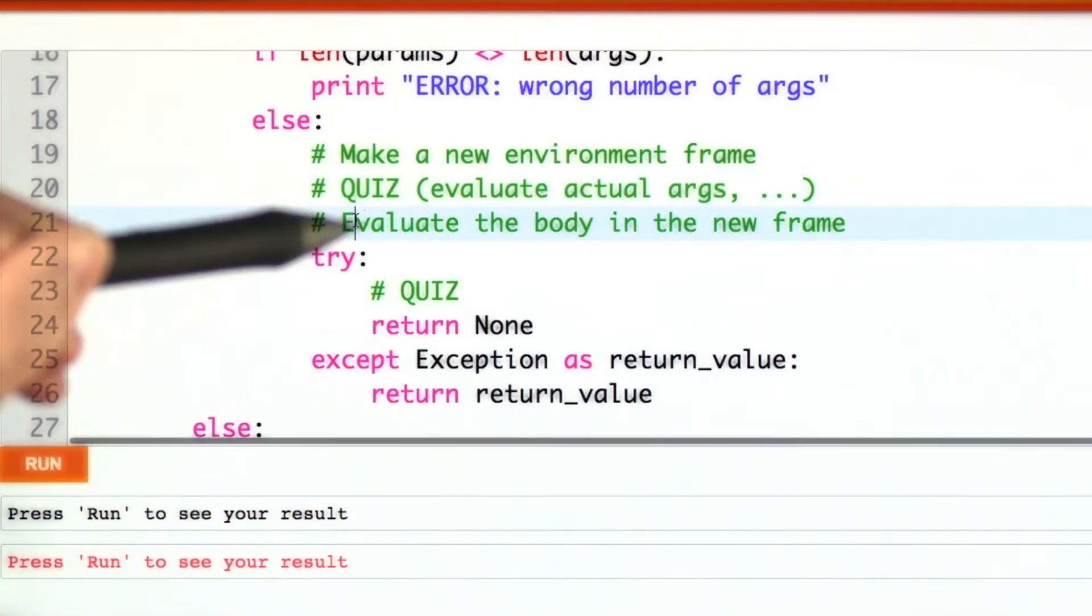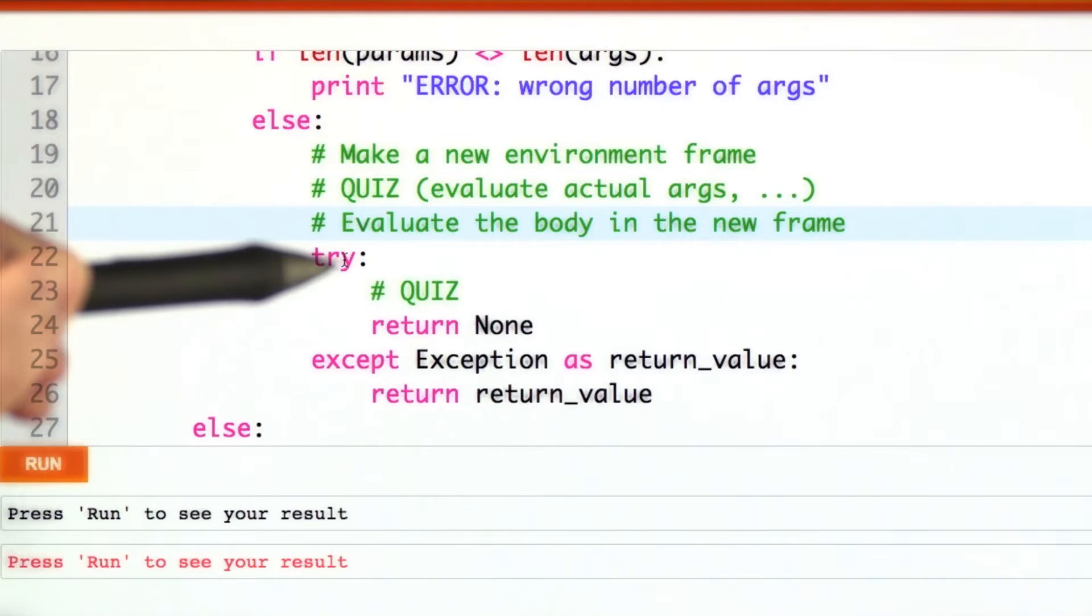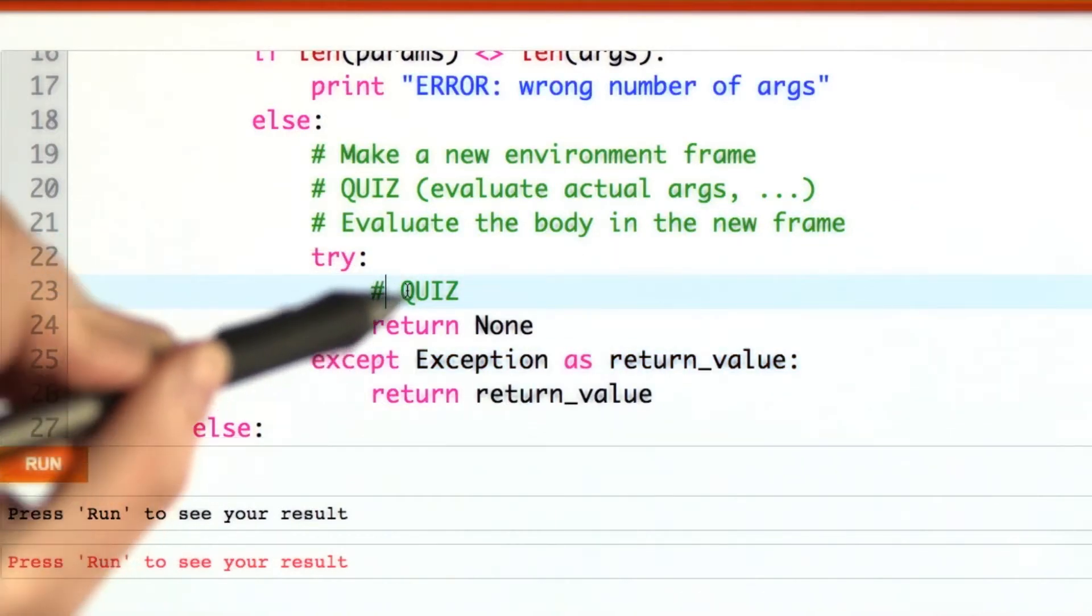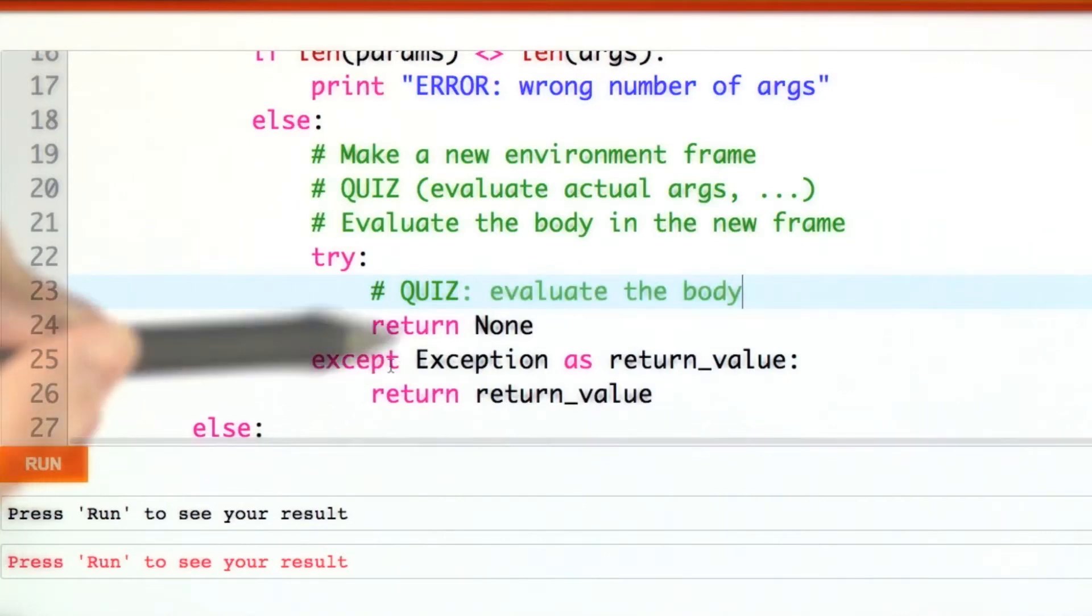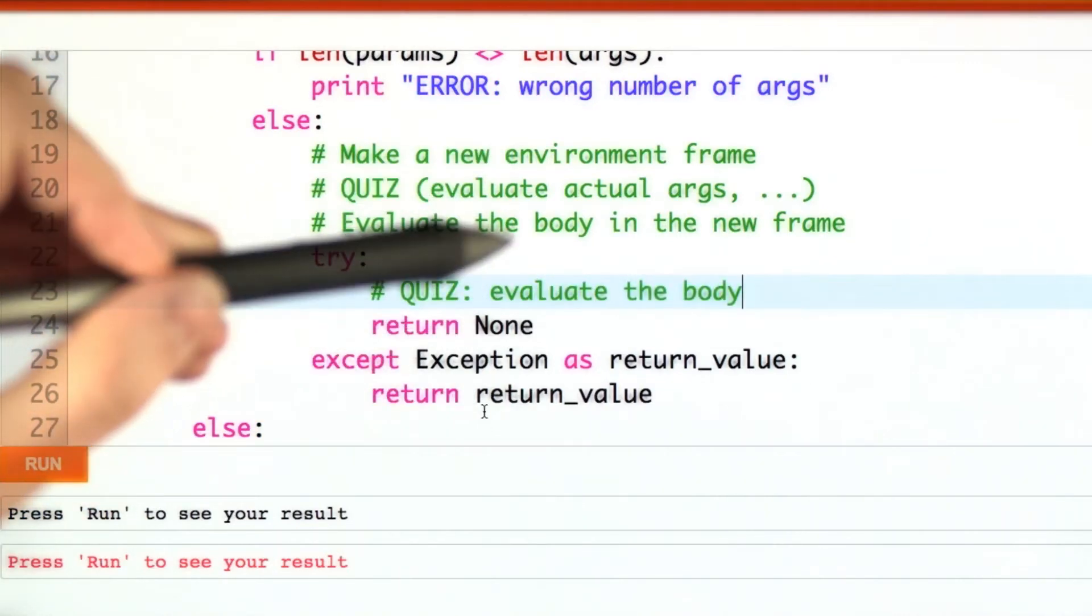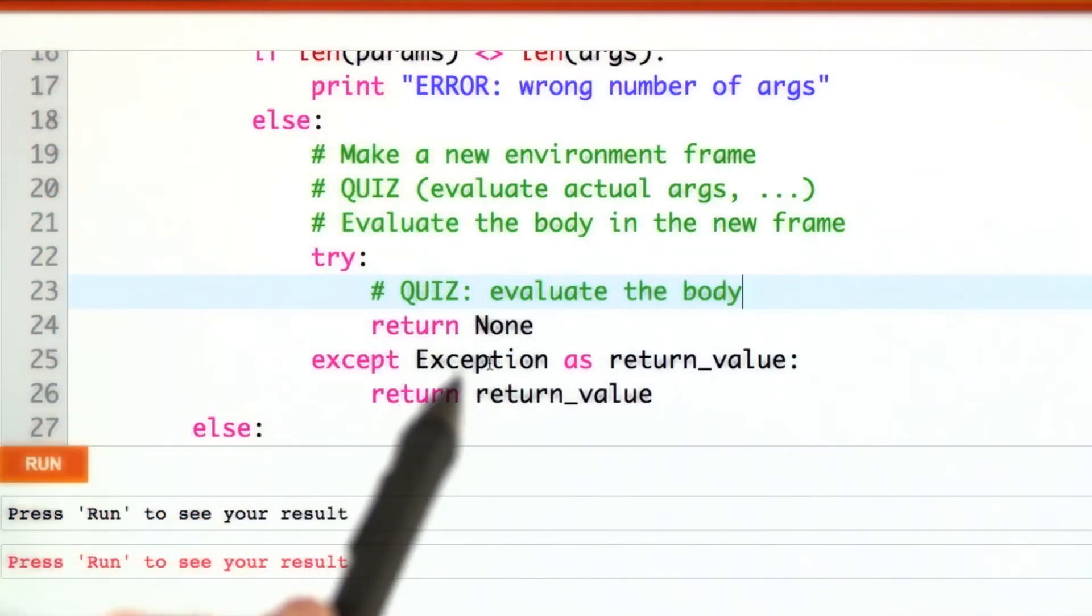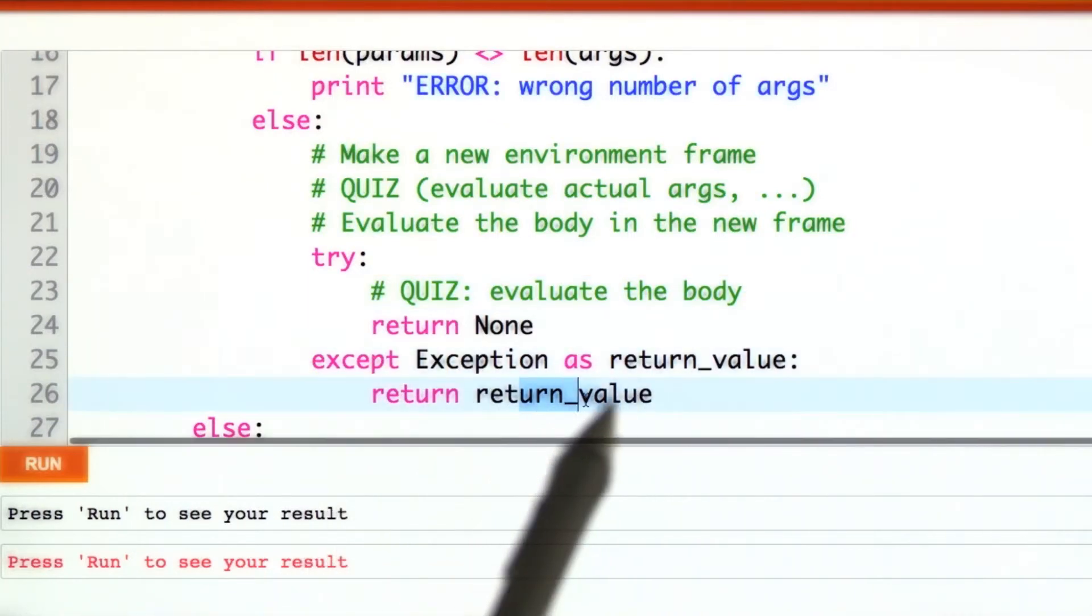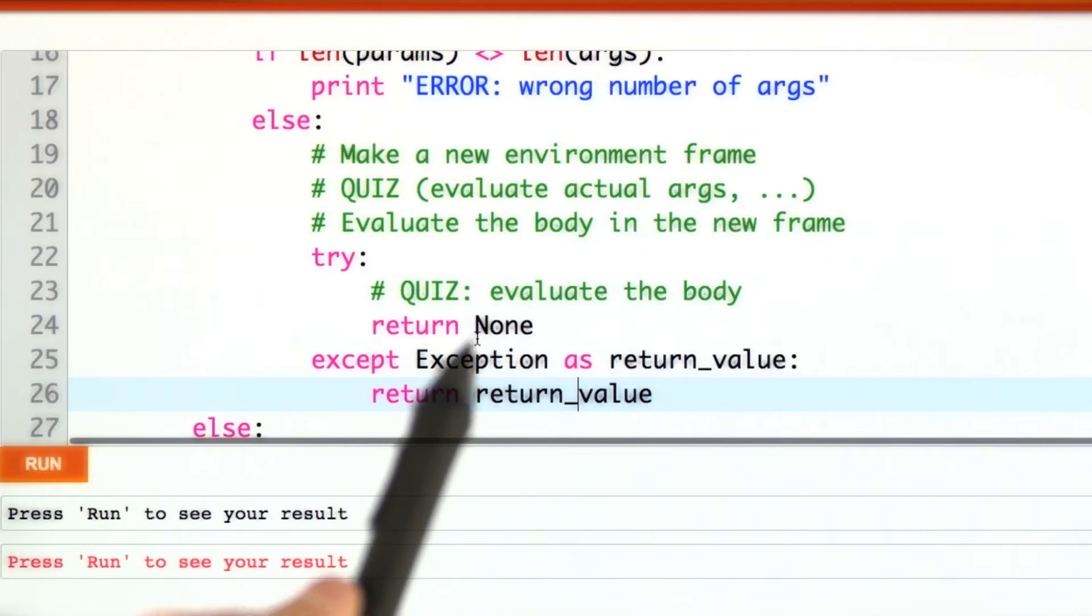And then we want to evaluate the body in the new frame, and we're going to do that with exception handling. We'll try doing something, and ideally, we will get to the end, and somewhere in the middle, we'll have raised that special exception holding the return value. If that happens, we'll return the return value. Otherwise, the user wrote code without a return statement, we'll just return none.